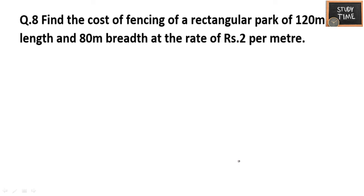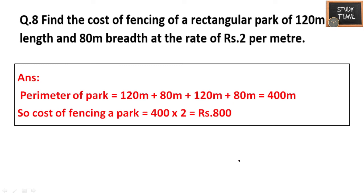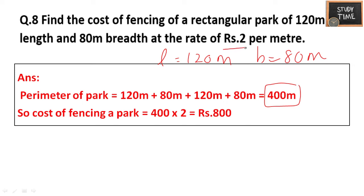Find the cost of fencing a rectangular park of 120 meters length and 80 meters breadth at the rate of rupees 2 per meter. Length = 120 m, breadth = 80 m. Perimeter of the park = 2 into (120 plus 80) = 400 meters. Cost of 1 meter = rupees 2, so cost of 400 meters = 400 into 2 = rupees 800.